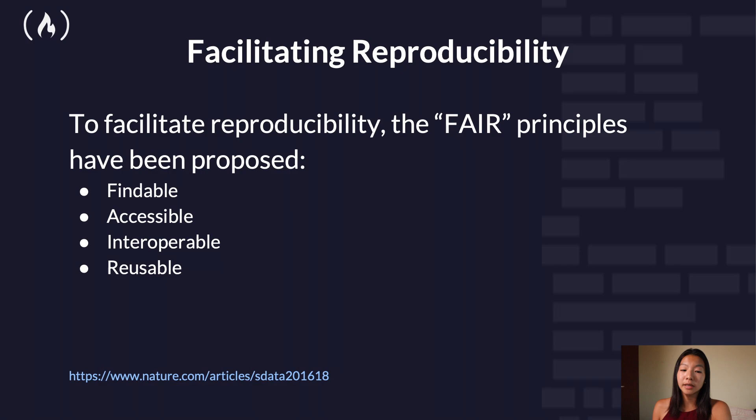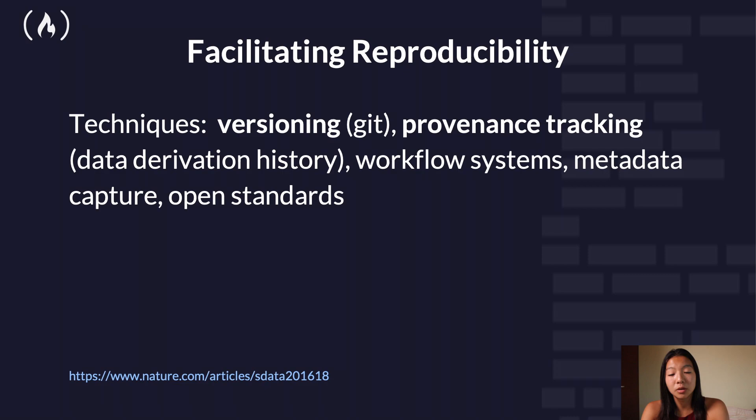FAIR stands for Findable, Accessible, Interoperable, and Reusable. There's a lot of ongoing research in how to facilitate reproducibility, especially with respect to provenance — understanding the why and where of data. Examples include providing provenance tracking environments for different execution environments, such as Jupyter notebooks or R Markdown source documents, and understanding provenance through machine learning operations.